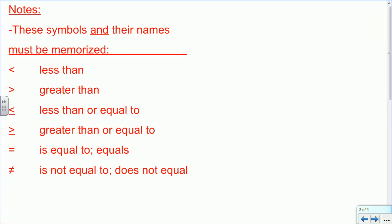The first thing we need to review is relative value. For the notes, these symbols and their names must be memorized. First we have the less than symbol, then the greater than symbol, then the less than or equal to symbol, then the greater than or equal to symbol. Finally, a pretty familiar one is the equal sign, so we read that as is equal to or equals.